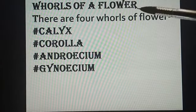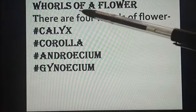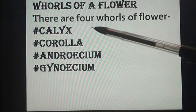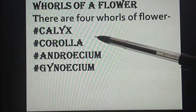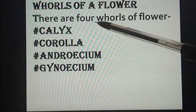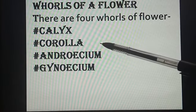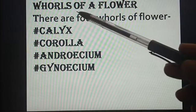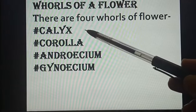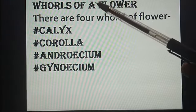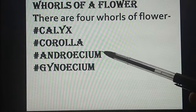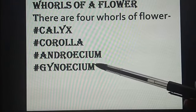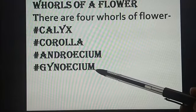Whorls of a flower — what do you mean by whorls, children? Whorls means a spiral pattern. Spiral pattern means making a circle. You always see a flower is in a spiral form. So these four parts make a flower in the shape of a spiral. The first part is calyx, which means sepal. Then corolla — corolla is petals. Then androecium, the male reproductive part, and gynoecium, the female reproductive part. In Class 5 also you have learned about androecium and gynoecium, and now we will discuss it more clearly.